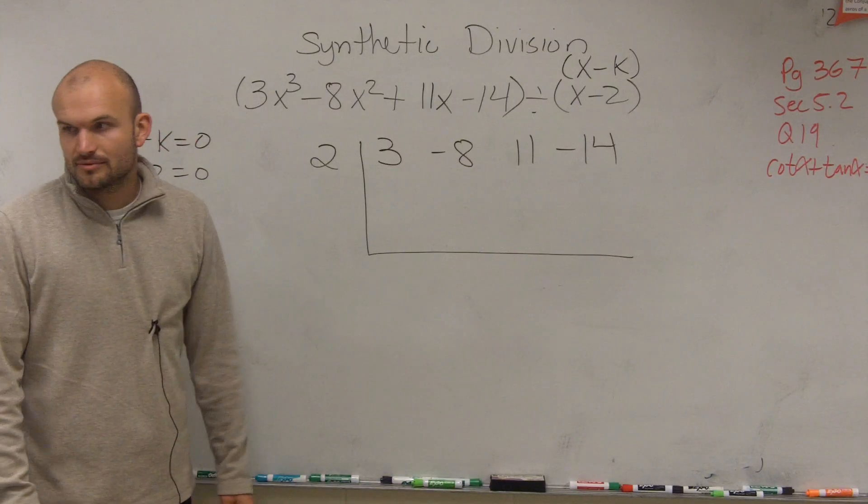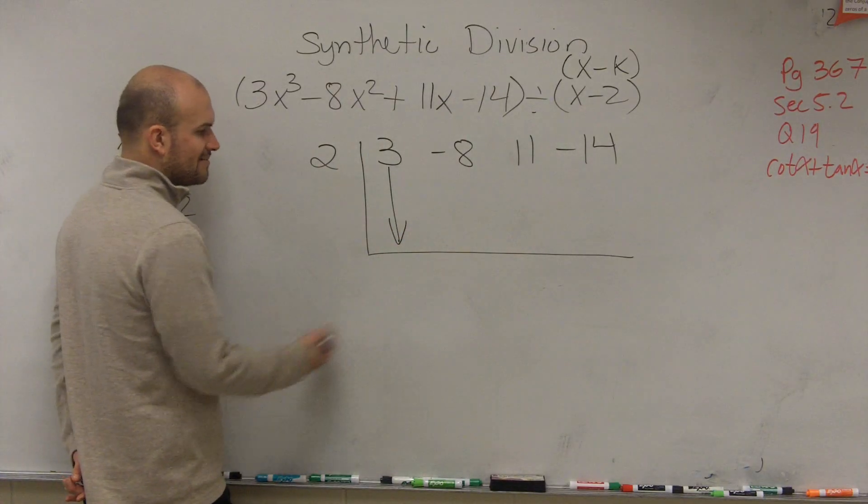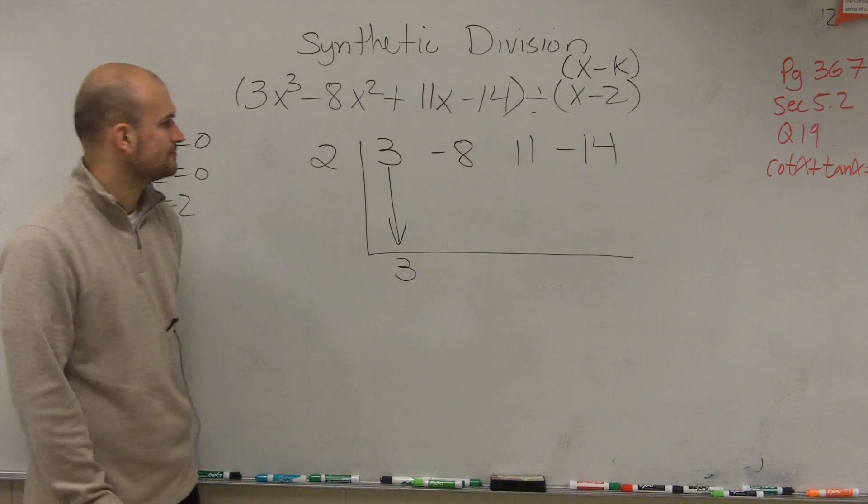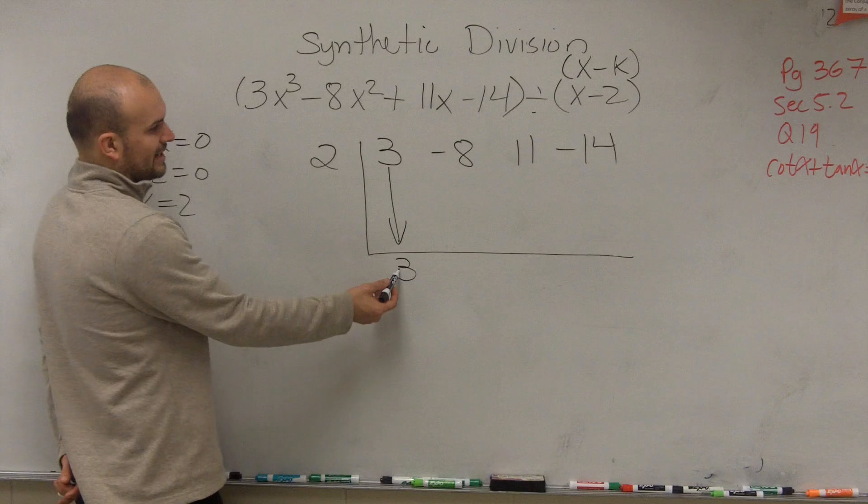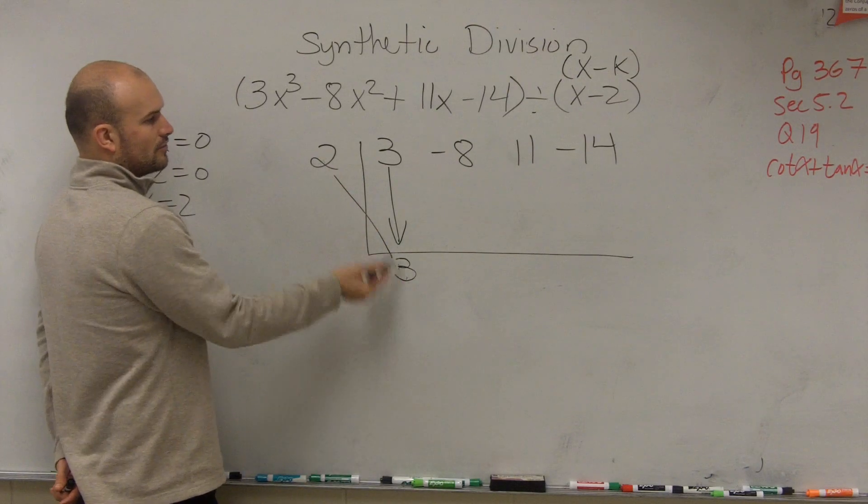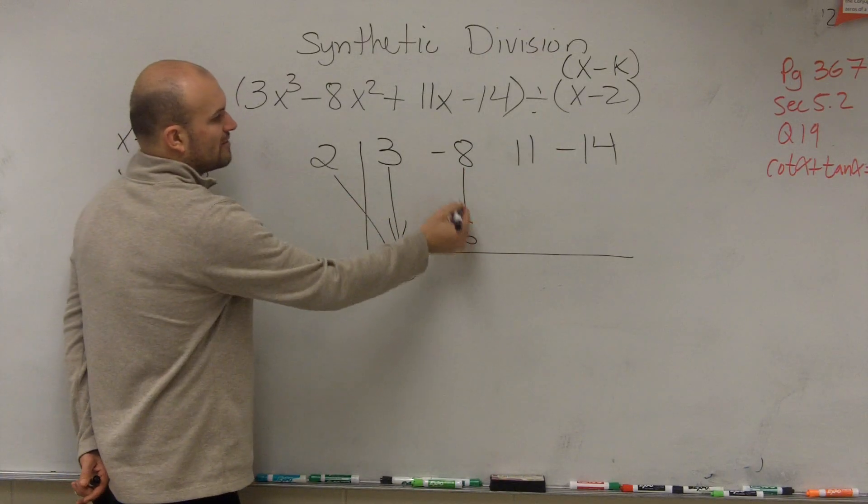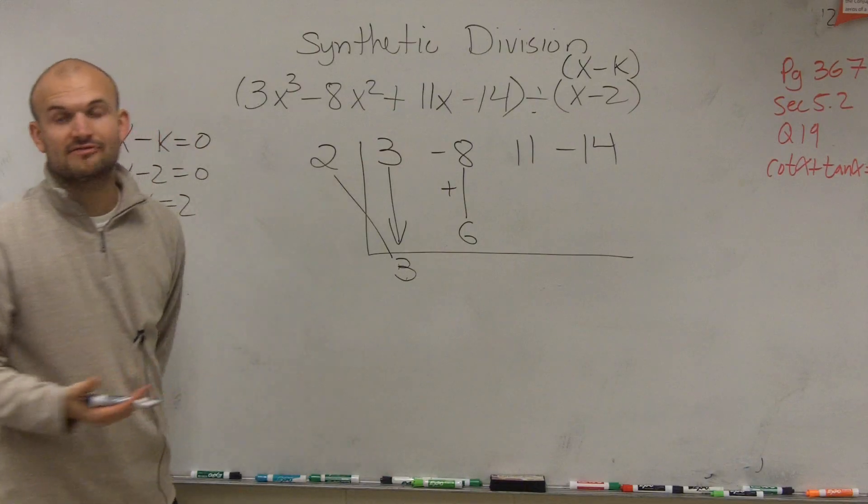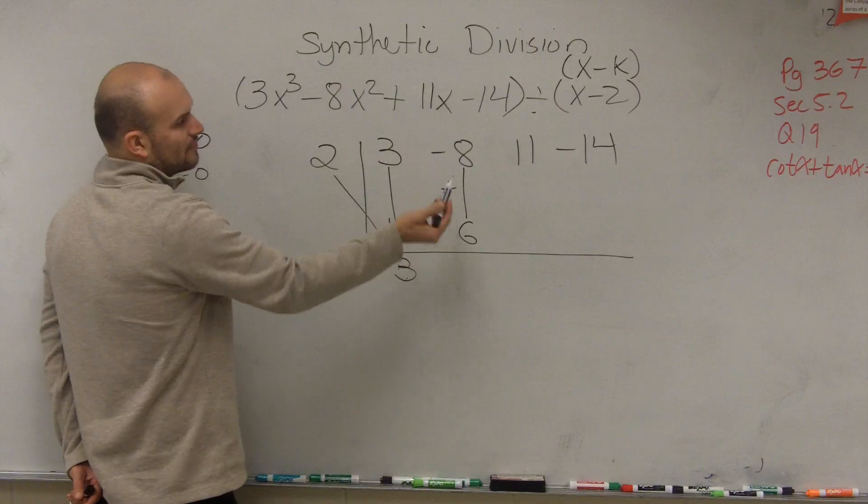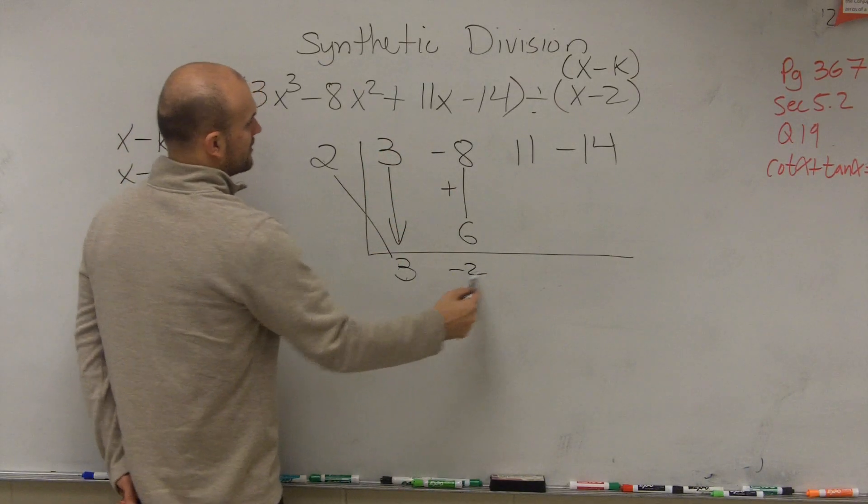Now the synthetic division algorithm goes like this. The first number is a freebie - you just bring it directly down. So we get 3. Then you multiply on the diagonal: 3 times 2 is 6. Then we vertically add. This is why a lot of people like synthetic division - we're adding instead of subtracting. So negative 8 plus 6 is negative 2.